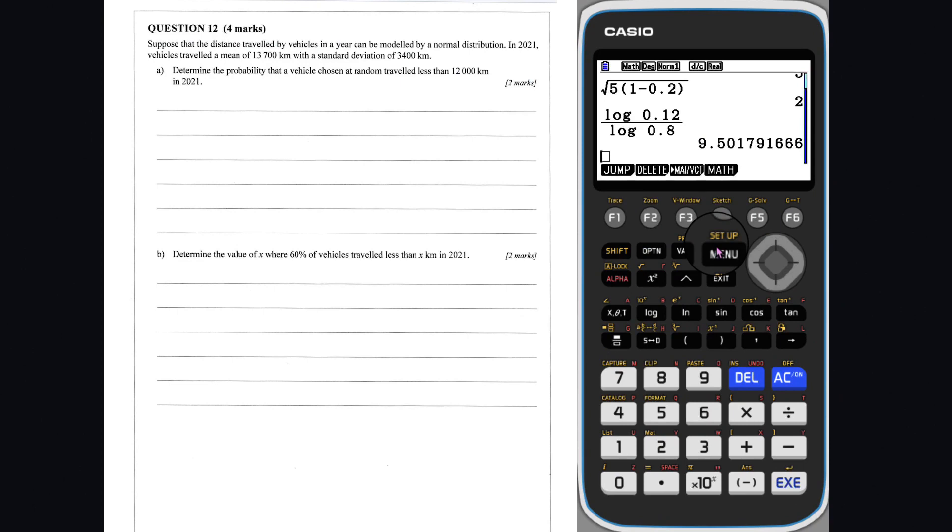Question 12 Part A: Let x be the distance traveled by vehicles in a year. We are told that the distance traveled can be modeled by using a normal distribution where the mean is 13,700 and the standard deviation is 3,400. We want to find the probability that a randomly chosen car traveled less than 12,000km. Entering the statistics mode on our calculator, we need to use the NCD feature.